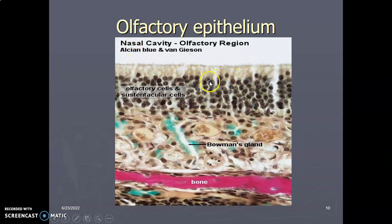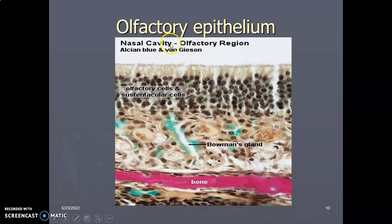In the olfactory region, you have olfactory cells for smell and support cells called sustentacular cells. The olfactory epithelium also contains Bowman's glands. Bowman's glands produce serous fluids that are able to dissolve the odoriferous substances — so as you inhale perfume and a few minutes later smell coffee, the Bowman's glands quickly produce serous fluid to wash off the odoriferous substance so that you're also able to perceive the coffee. The olfactory epithelium has three cells: olfactory cells for smell, sustentacular support cells, and basal cells for regeneration.